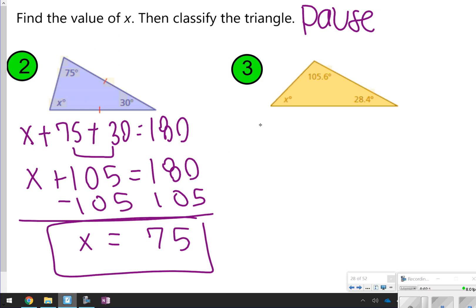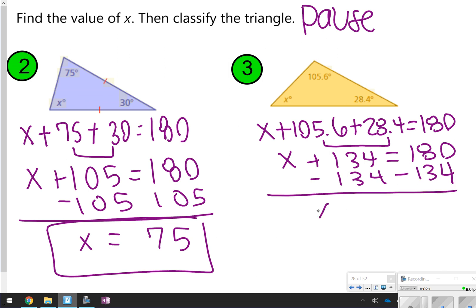For number 3, you just have to use your little bit of brain power here with your decimals. So x plus 105.6 plus 28.4 equals 180. 105.6 and 28.4 should have been 134. So now we have x plus 134 equals 180. And then we're going to subtract 134 from both sides, so x equals 46. How'd you do?